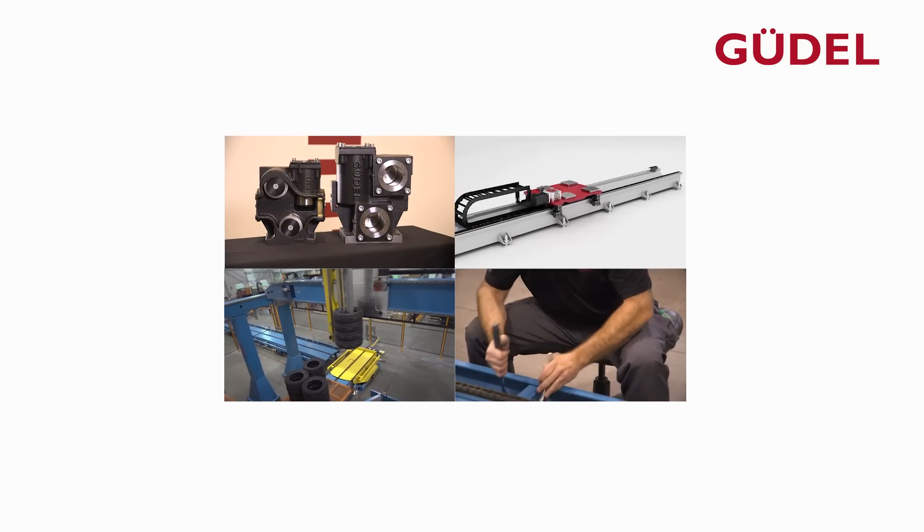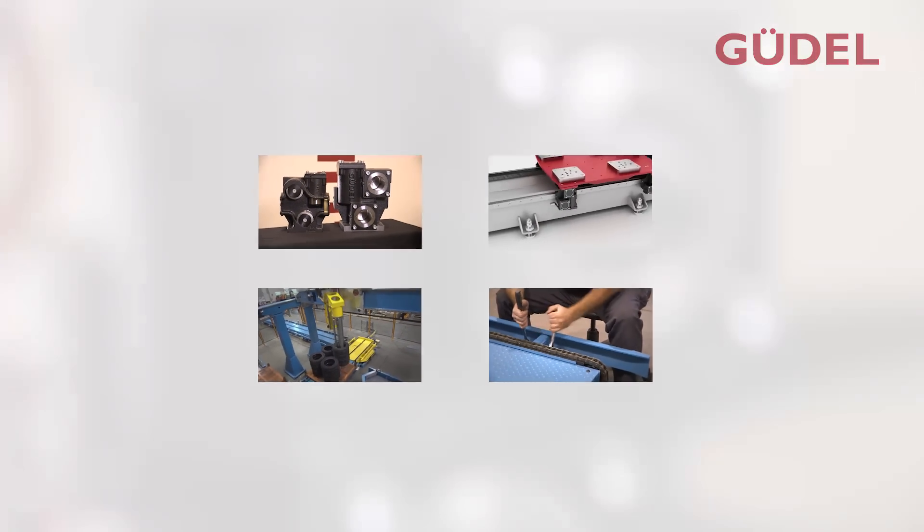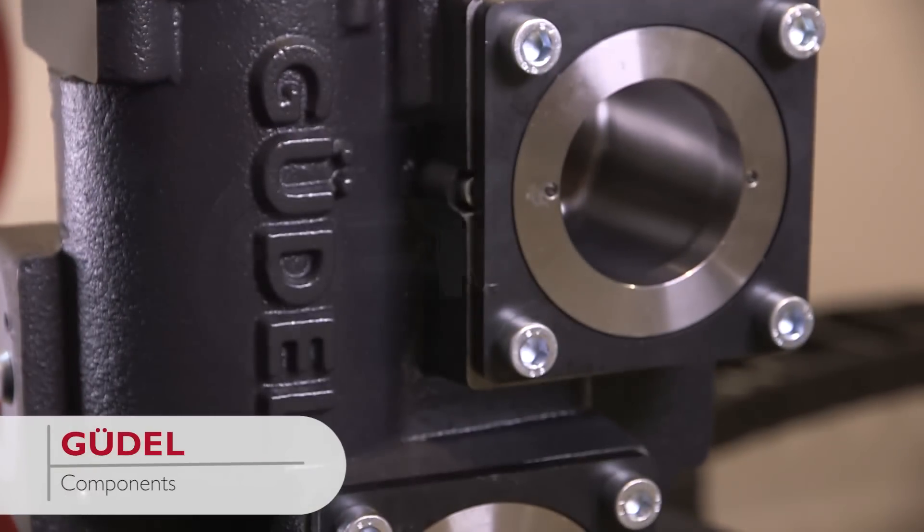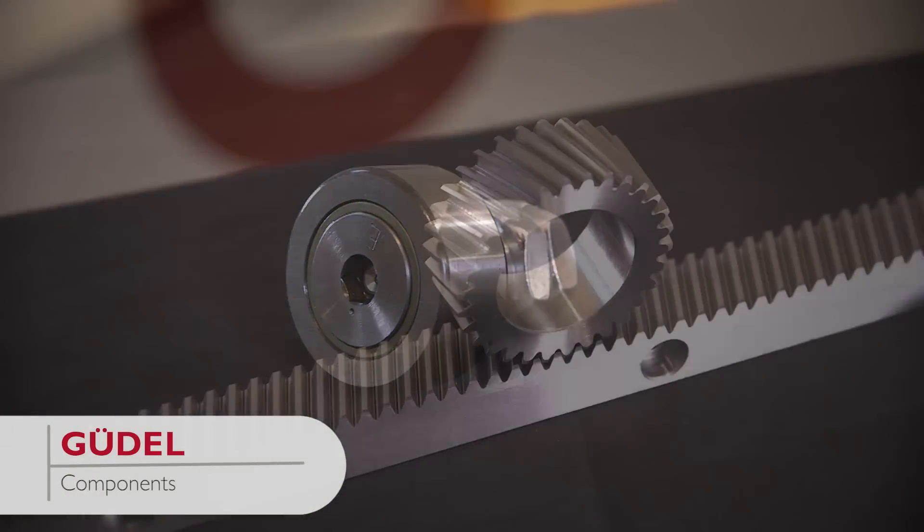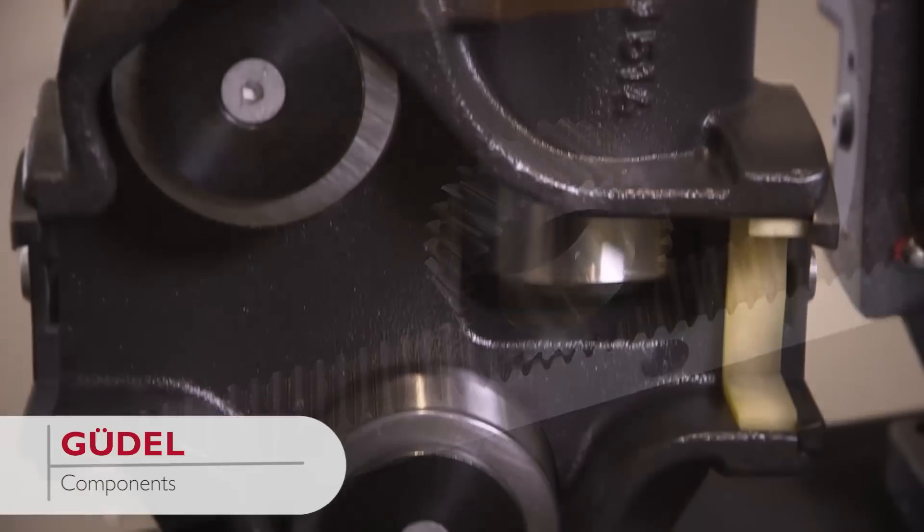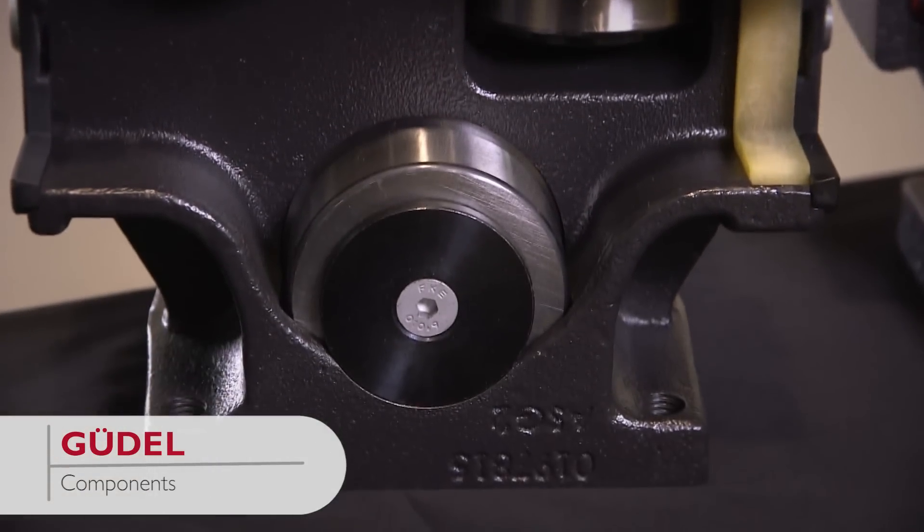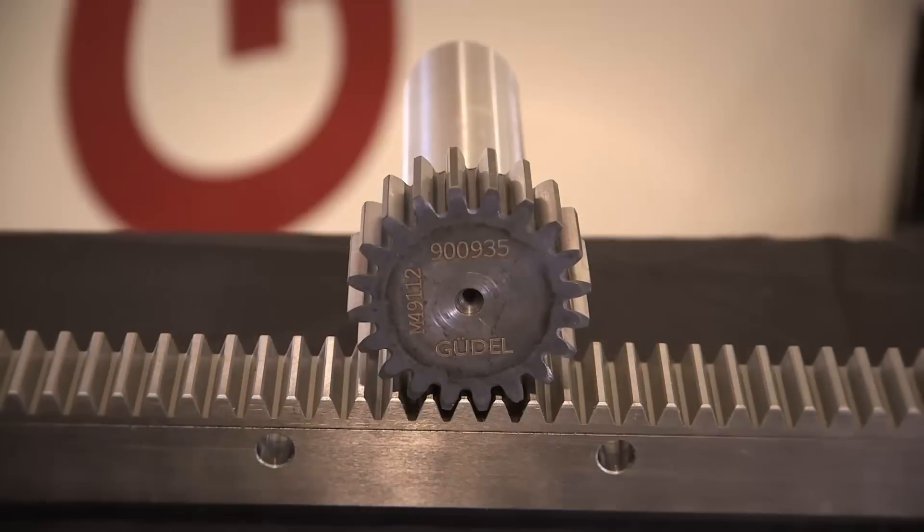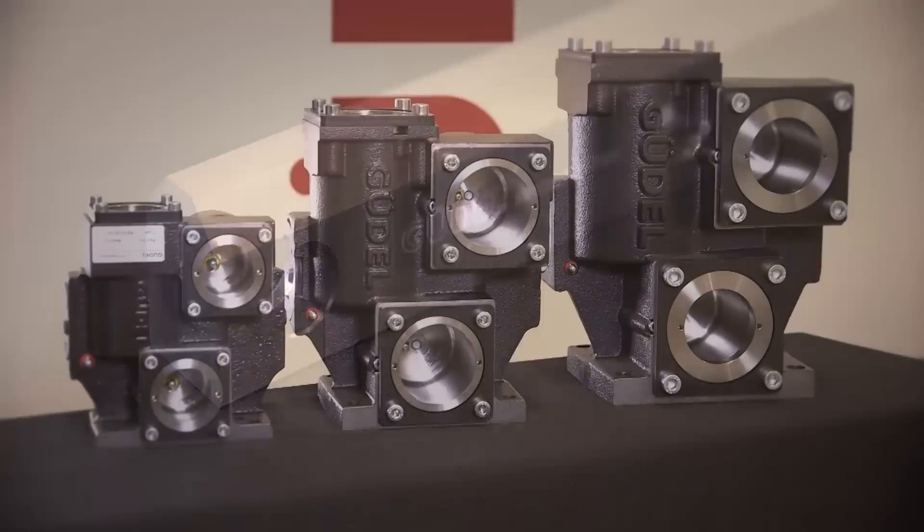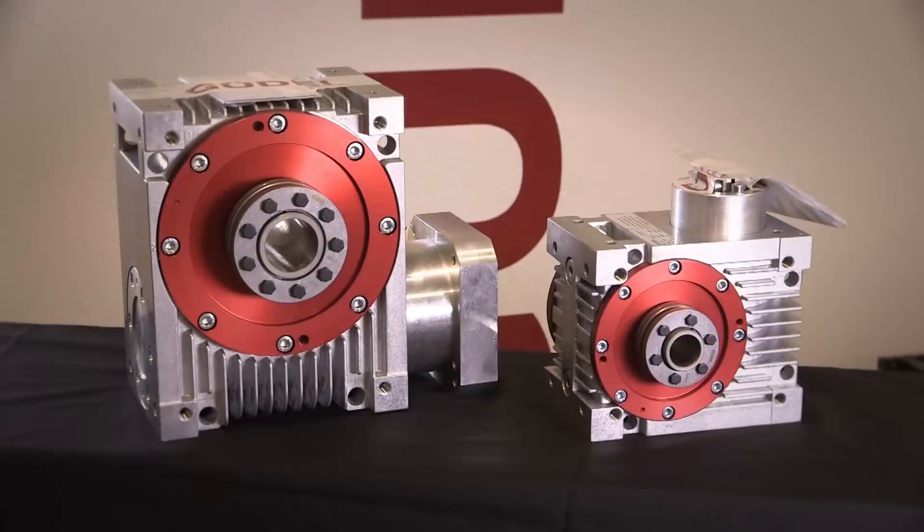Güdel provides customers with four product groups. The first is components. Güdel is known for manufacturing a full line of high-performance linear motion components, including racks, pinions, rails, bearing blocks, and gearboxes.